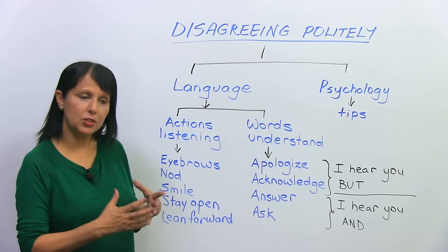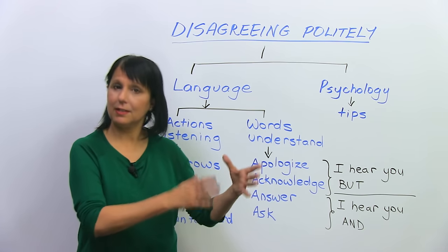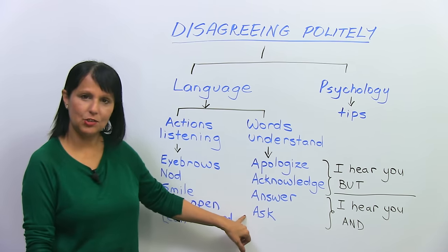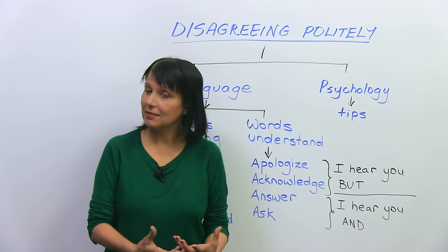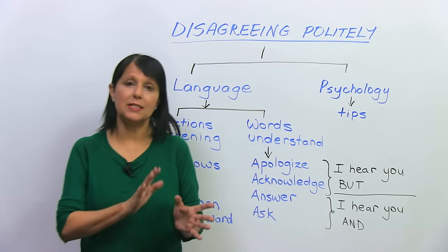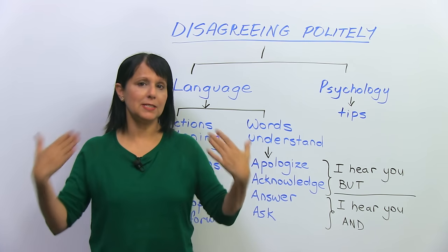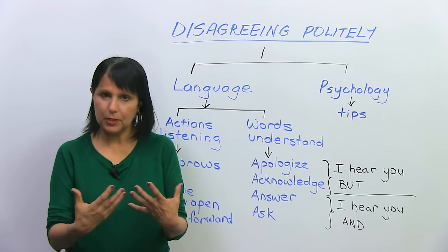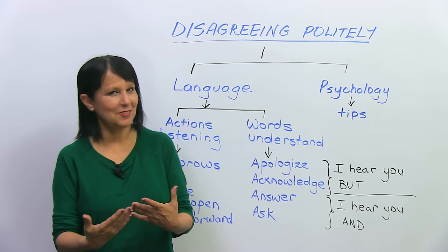Apologize and acknowledge means to say, yes, I know what you're saying — communicating, I hear you, but we're going to say something. And then the last two strategies, which are answer and ask, are basically communicating, I hear you, and... Sometimes when people hear the word 'but,' they become very defensive and they stop listening. So sometimes you could express the same idea by saying 'and.' I'll show you both ways and what expressions you can use when you want to show that you understand but you still disagree.